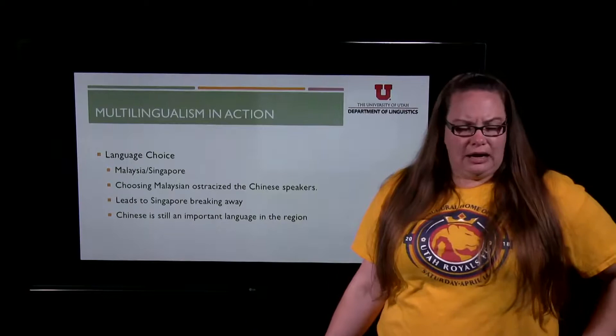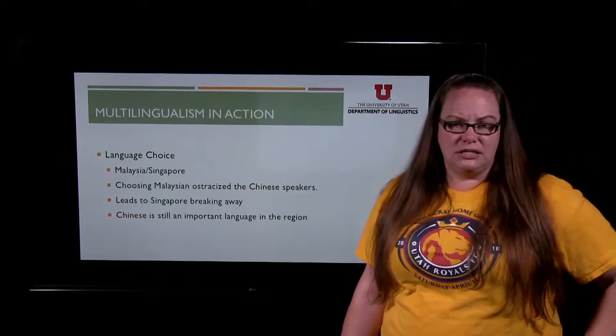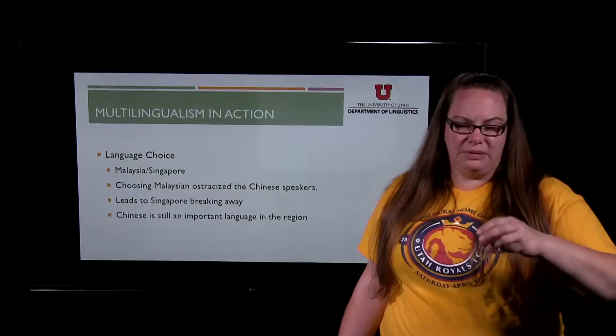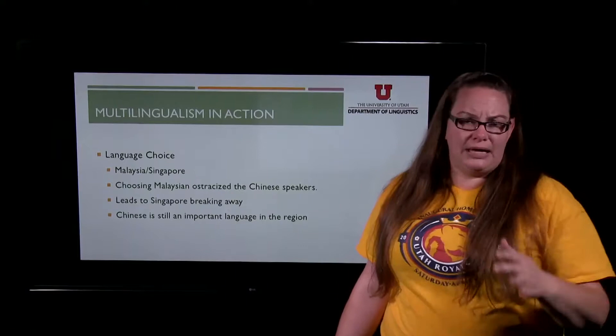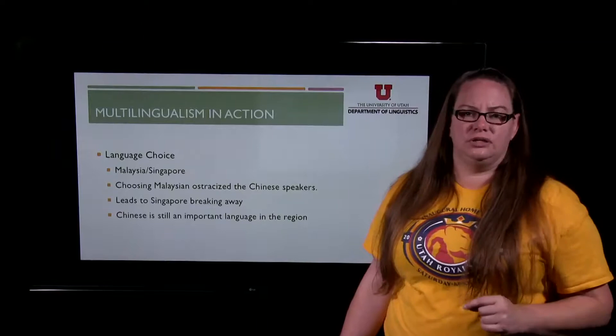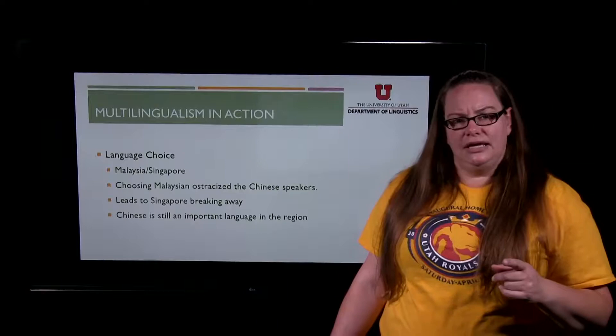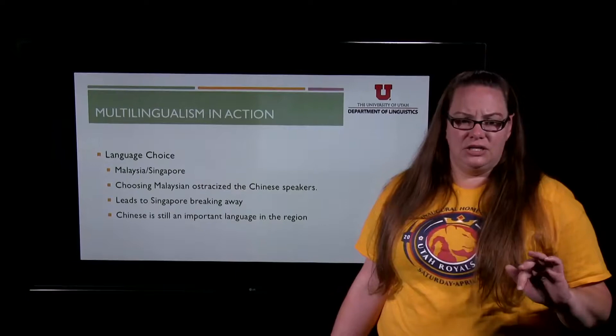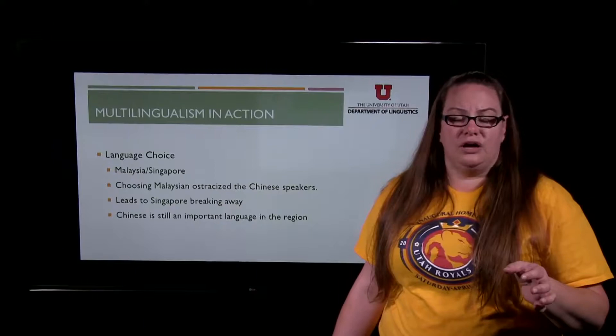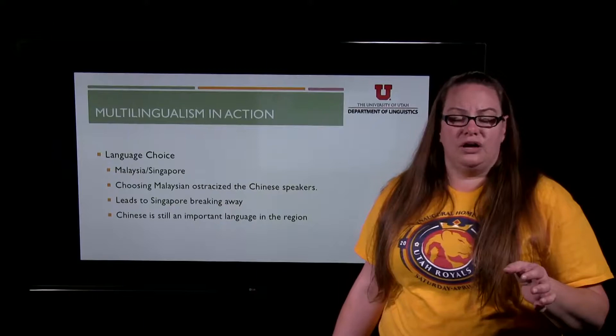Let's talk about what happens in a multilingual society with language choice. Our Kirkpatrick book gave us the example of Malaysia and Singapore. Malaysia and Singapore were closely related and ruled by the same people. Malaysia made a language choice — they decided to prioritize Bahasa Malaysia, teaching it in schools as their official language. When a language becomes official, it includes the group who speaks it but also excludes others. In this case, people in the Singapore area were of Chinese descent and did not know Bahasa Malaysia — they spoke Chinese instead.